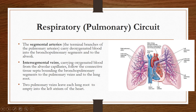From the alveoli and bronchopulmonary segments, oxygenated blood is carried towards the heart through the pulmonary vein. The pulmonary circuit starts from the pulmonary arteries, which give segmental arteries that carry deoxygenated blood to the bronchopulmonary segments and alveoli. After oxygenation, the intersegmental veins carry oxygenated blood from the alveolar capillaries, following the connective tissue septa. The veins are not present inside the bronchopulmonary segment but lie in the connective tissue septa bounding it, then carry oxygenated blood to the pulmonary veins.